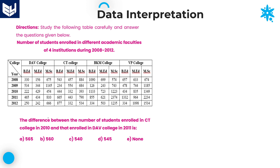Next question: what is the difference between the number of students enrolled in City college in 2010 and that enrolled in DAV college in 2011? It is very important to find the difference. First, verify City college 2010 total. City college 2010 is the third row, second college. The 2010 total is a combination of BED, MED, and MSC. I will add these values: 444, 332, and 393.